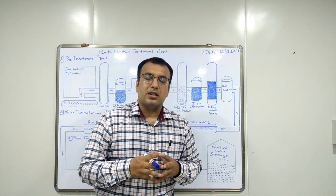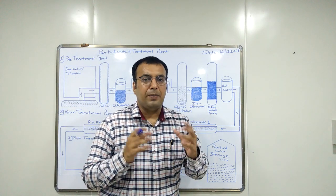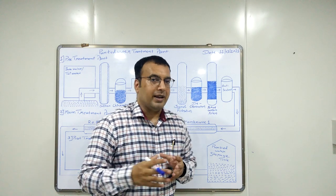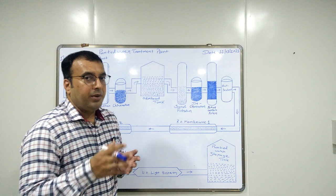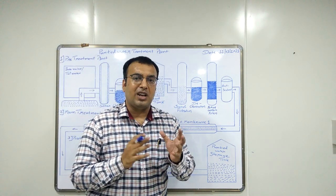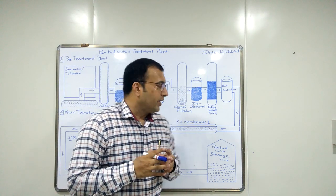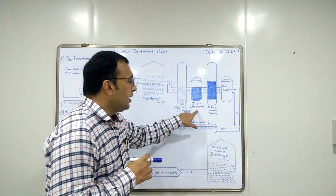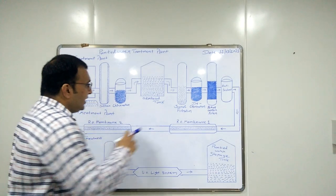Many chemicals are used for dechlorination, but the effective chemical is sodium metabisulphite. As per calculation, 1.34 ppm of sodium metabisulphite is required to neutralize 1 ppm of chlorine. So the main function of dechlorination is to remove free chlorine from the water.